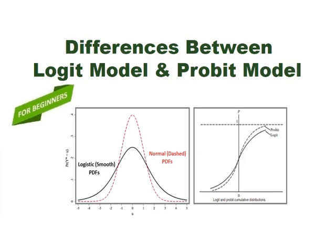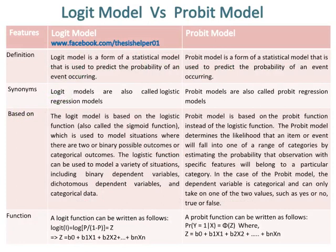Differences between Logit Model and Probit Model. Logit Model is a form of a statistical model that is used to predict the probability of an event occurring, whereas Probit Model is a form of a statistical model that is also used to predict the probability of an event occurring. Logit Models are also called Logistic Regression Models, whereas Probit Models are also called Probit Regression Models.